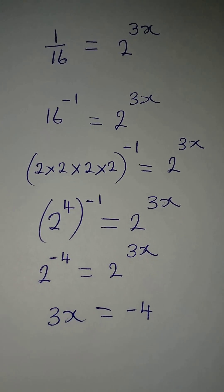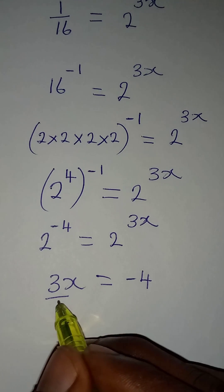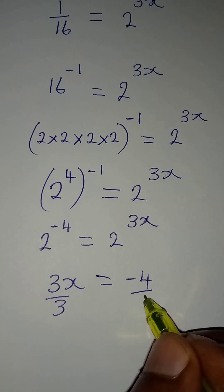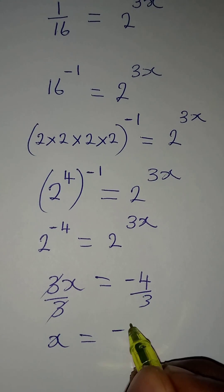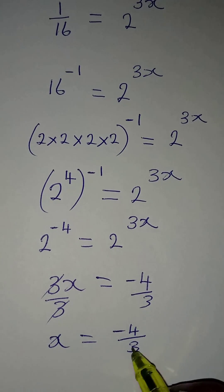Remember, we are looking for the value of x, so we divide by the coefficient, which is 3. This will cancel this and x will be equal to minus 4 over 3.